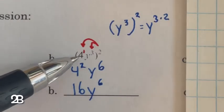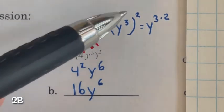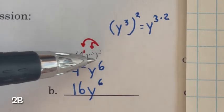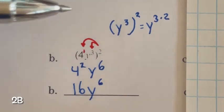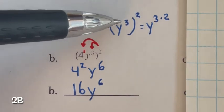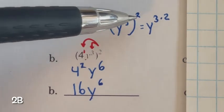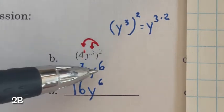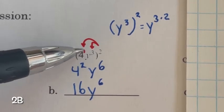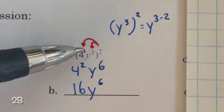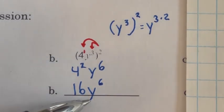For 4y to the third, raised to the second power: when you have a power raised to a power, the rule is you multiply. That means I have two groups of y to the third — 3 y's multiplied by 3 more y's gives 6 total, so that's y to the sixth. 3 multiplied by 2 is 6. I used a placeholder for 4 to the first power — anything to the first power is itself. 2 multiplied by 1 is 2, so 4 squared is 16. We get 16y to the sixth.